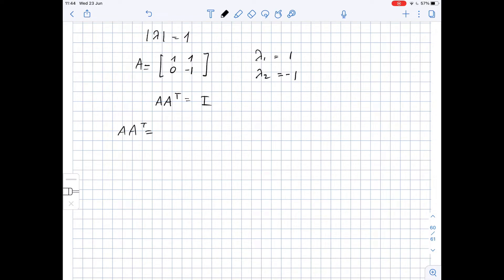A times A transposed equals [1, 1; 0, -1] times A transposed. So here we have [1, 1; 0, -1].